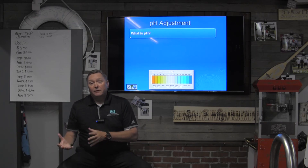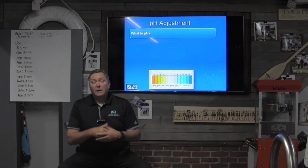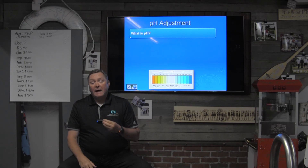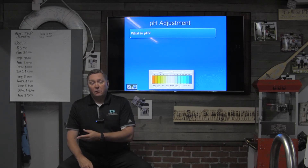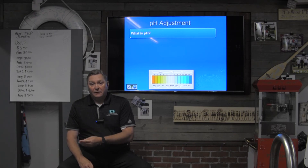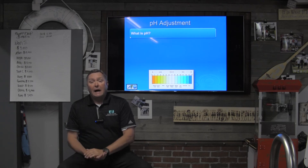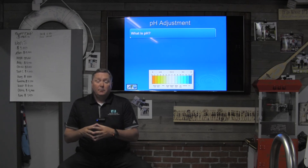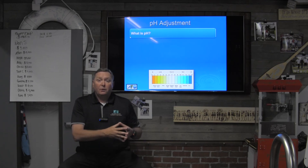pH also has a great deal of effect on chlorine. A low pH means the chlorine molecule becomes very fast and very effective, while a high pH slows the chlorine molecule down and it's less effective at oxidizing organic waste. So pH plays a huge role in ORP and a huge role in total alkalinity.